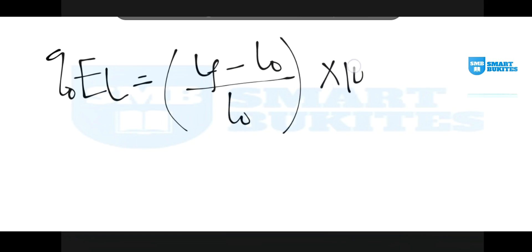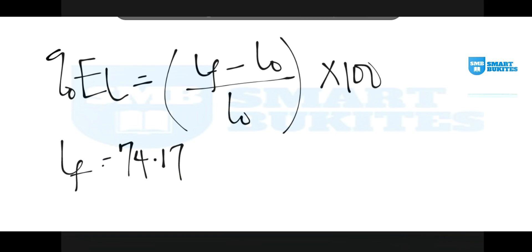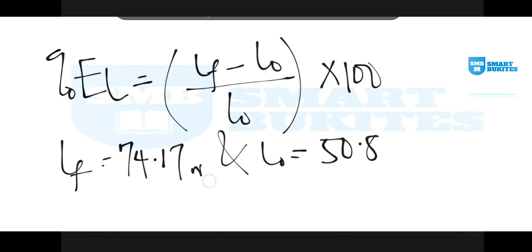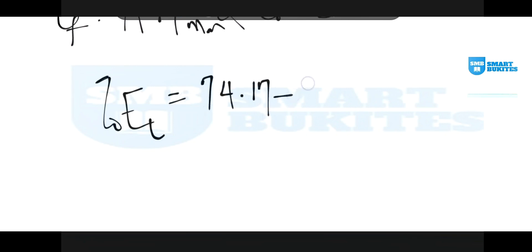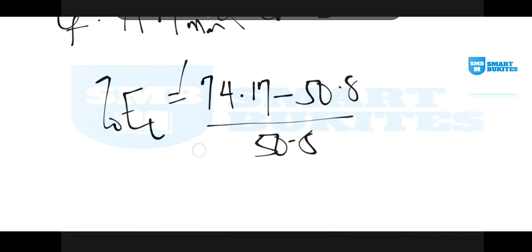From the question, the final length at the point of fracture is 74.17 mm and the original length is 50.8 mm. So the percentage elongation is (74.17 − 50.8) / 50.8 × 100.